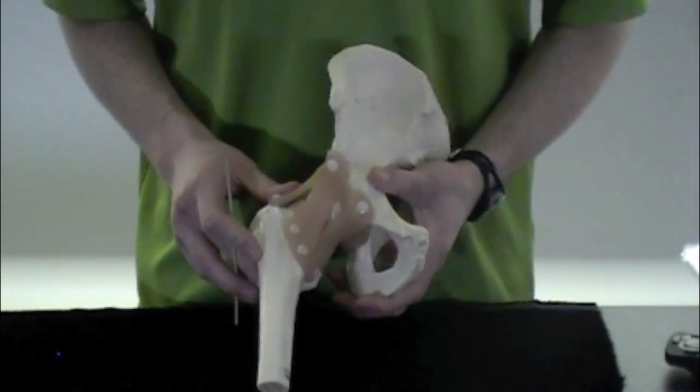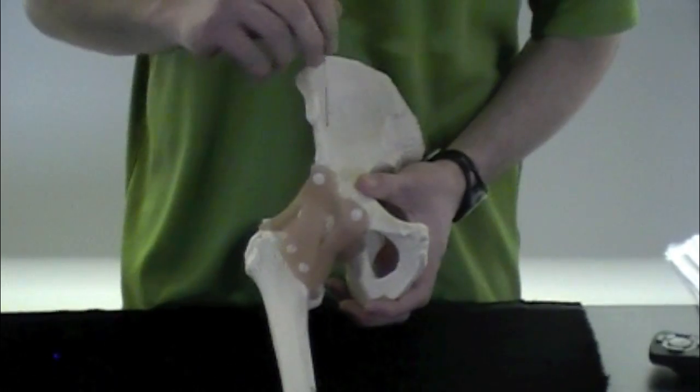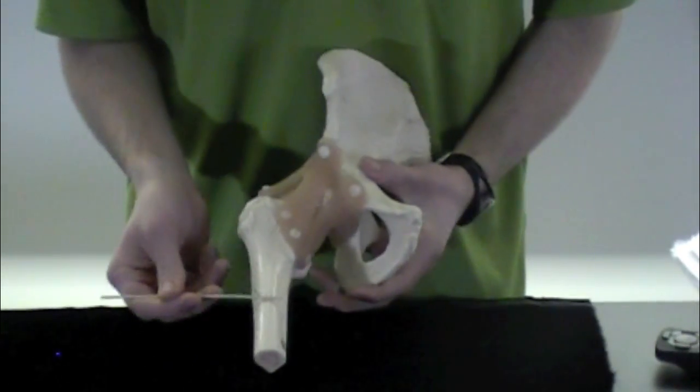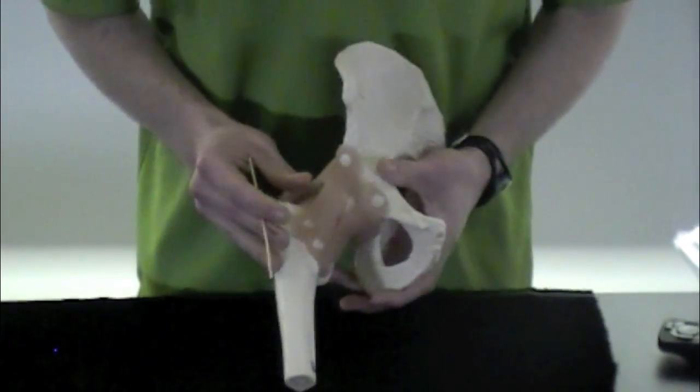We're going to be going over the ligaments of the hip here. Just to get you oriented, we have the ilium up here, pubis down here, the femur down here. It's going to be your right hip.